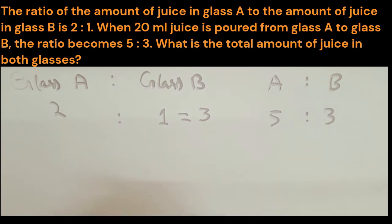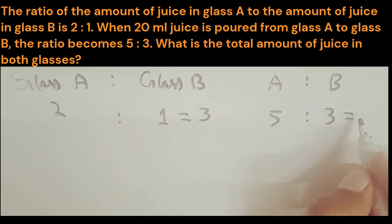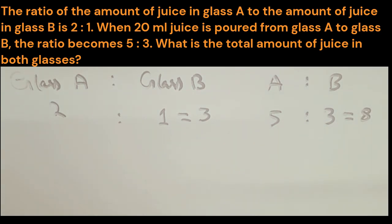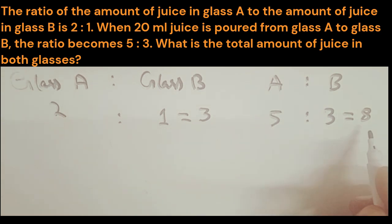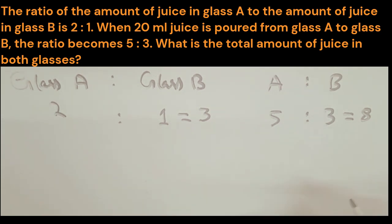Later on, when 20 ml was poured from glass A to glass B, the ratio became 5:3, so the total units became 8. Since the overall amount of juice remains the same, we check that the total amount before and after will remain equal, and we find at what stage these totals become the same.